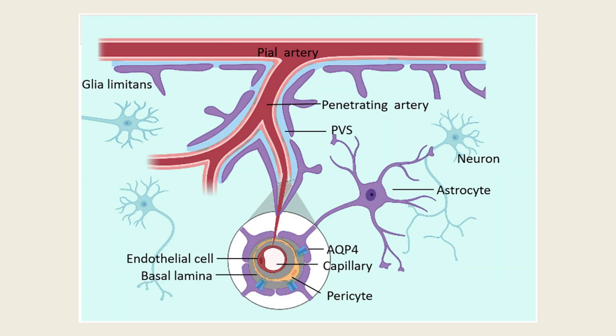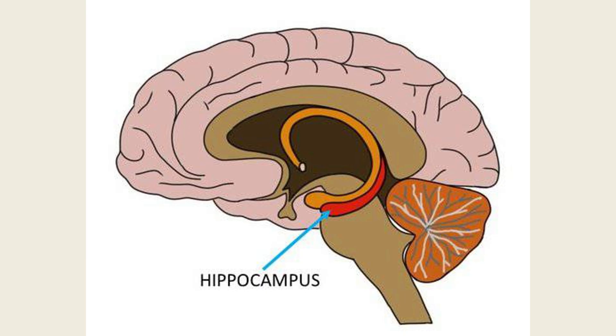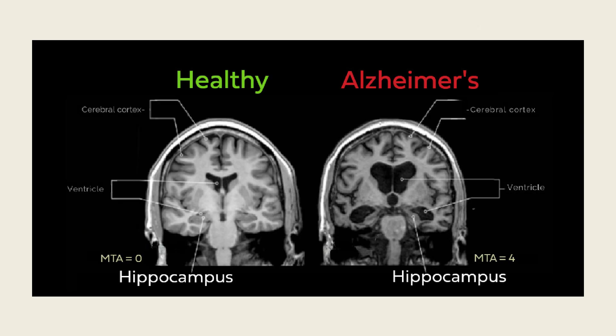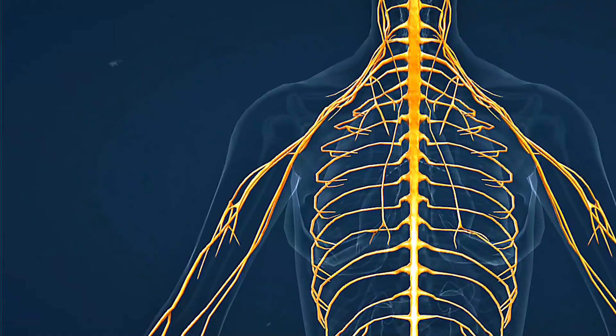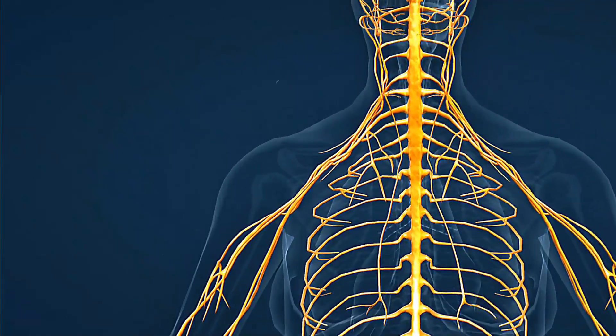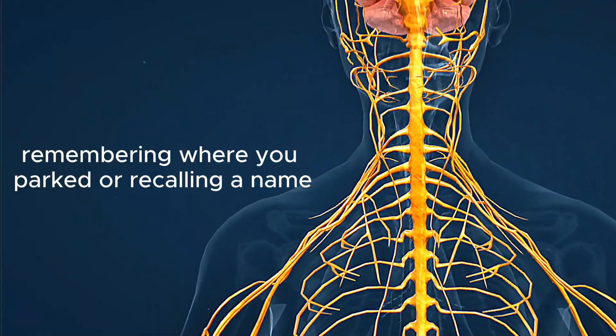When the glymphatic system sputters, the first casualty is often the hippocampus, the seahorse-shaped structure responsible for forming new memories and navigating space. Early in Alzheimer's, hippocampal volume shrinks, neural connectivity weakens, and even simple tasks, like remembering where you parked or recalling a name, become mental feats.